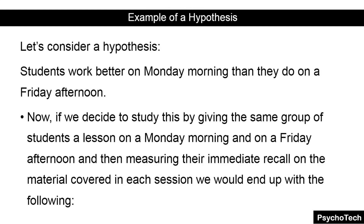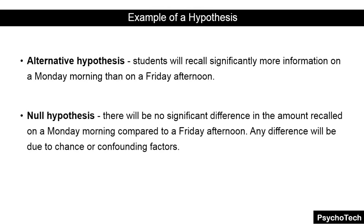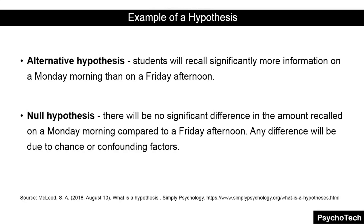If we decide to study this by giving the same group of students a lesson on a Monday morning and on a Friday afternoon, and then measuring their immediate recall of the material — the alternative hypothesis states that students will recall significantly more information on a Monday morning than on a Friday afternoon. The null hypothesis states that there will be no significant difference in the amount recalled, and any difference will be due to chance or confounding factors.